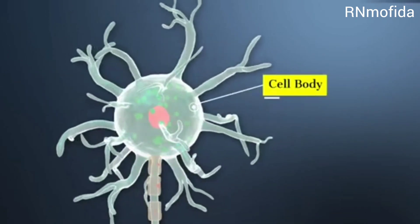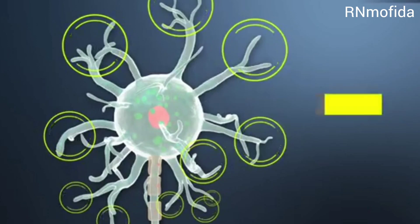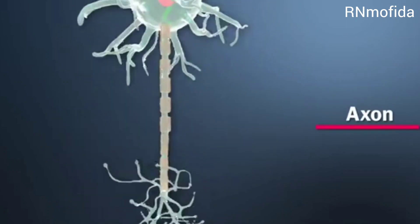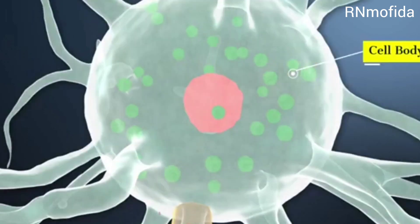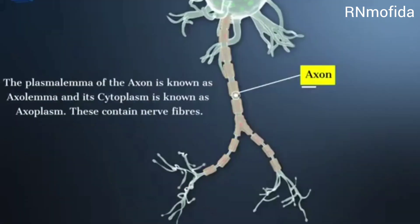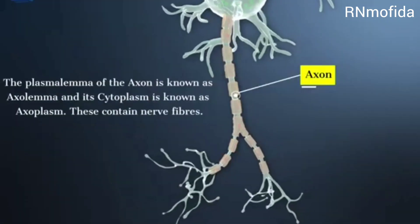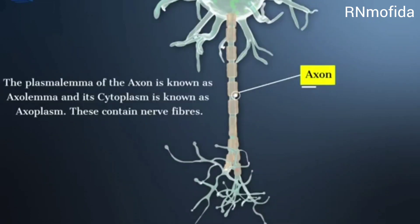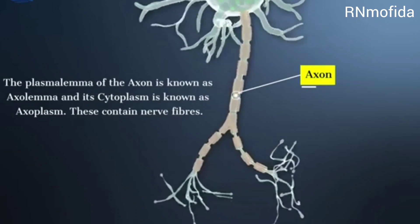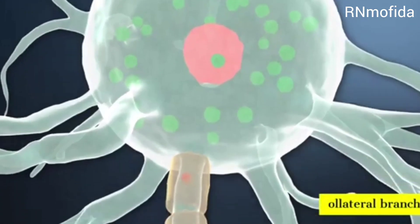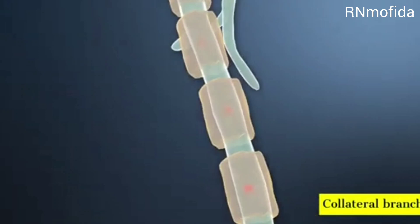The axon is a cylindrical structure. It emerges from the cell body at the axon hillock. The plasma membrane of the axon is known as axolemma and its cytoplasm is known as axoplasm. This contains nerve fibers. The axon forms collateral branches.